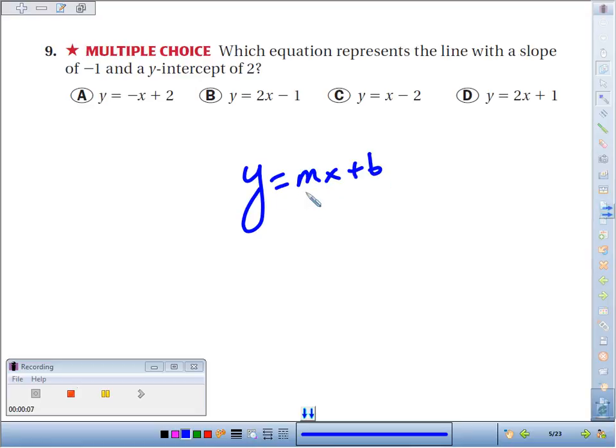Slope-intercept equation, y equals mx plus b. m is our slope, so they tell us that's negative 1 times x, plus our y-intercept, they tell us is 2.